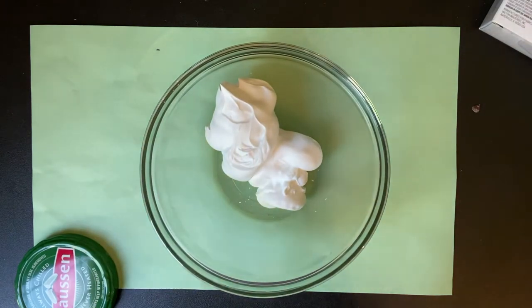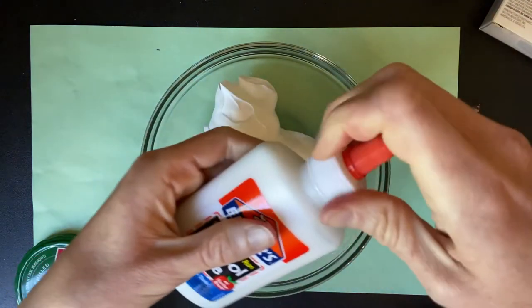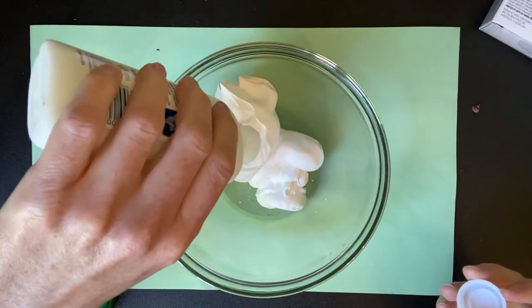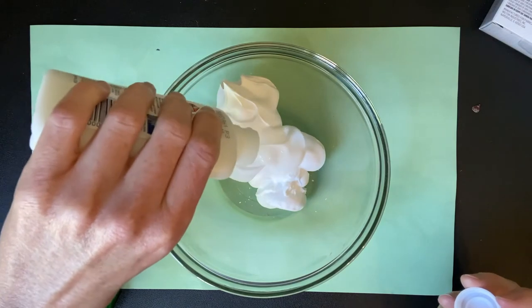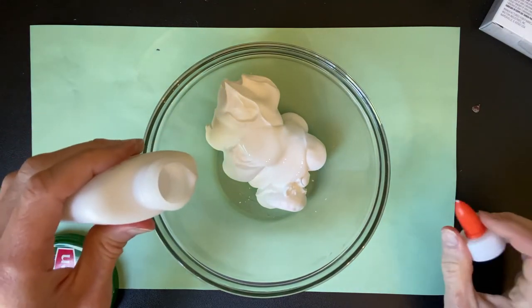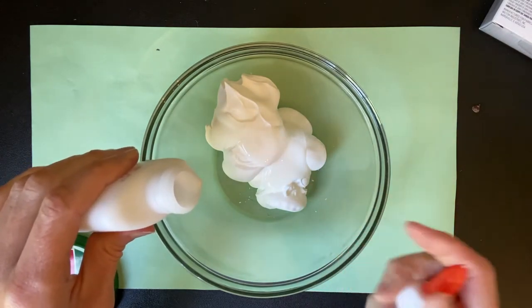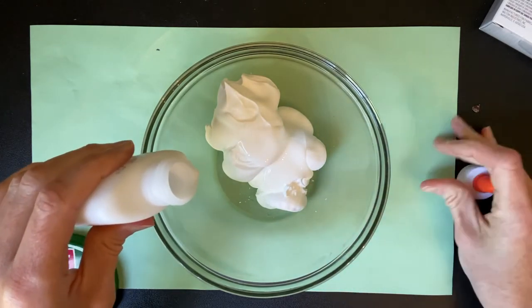Now, if I want it just to be white frosting, I don't have to do anything to this, but I do have to add my Elmer's glue. And this was a little bit confusing for me when I was looking it up on the blogs, because I didn't know how much to add. And all I found was that it said basically add enough so that it forms stiff peaks. So I'm going to show you what that means.